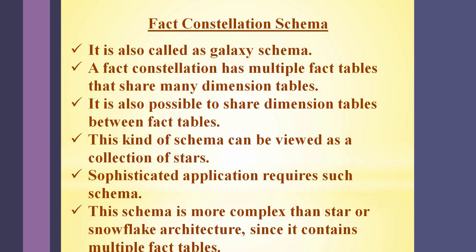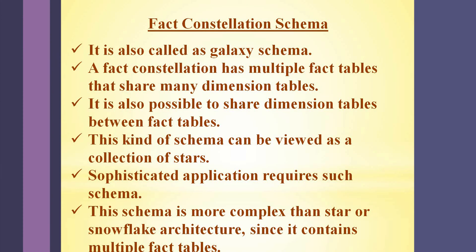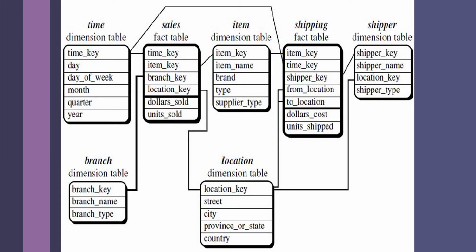The last kind of schema is the fact constellation schema, also called galaxy schema. This schema is more complex than star schema and snowflake schema, since it contains multiple fact tables that share many dimension tables. This kind of schema is used by sophisticated applications and can be viewed as a collection of stars. In the example on screen, this schema consists of two fact tables.